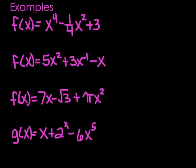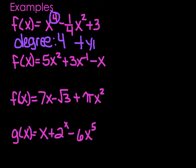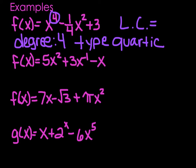Here are some examples. For each one, tell me the degree, the type, and the leading coefficient. You can hit pause and try them yourself. The first one — degree is always your highest power. In this case, our highest power is 4, so our degree is 4. Type: a fourth degree is quartic. The leading coefficient is the coefficient on the highest power — there's no written coefficient, so it is 1. Don't put 0 — it's 1.